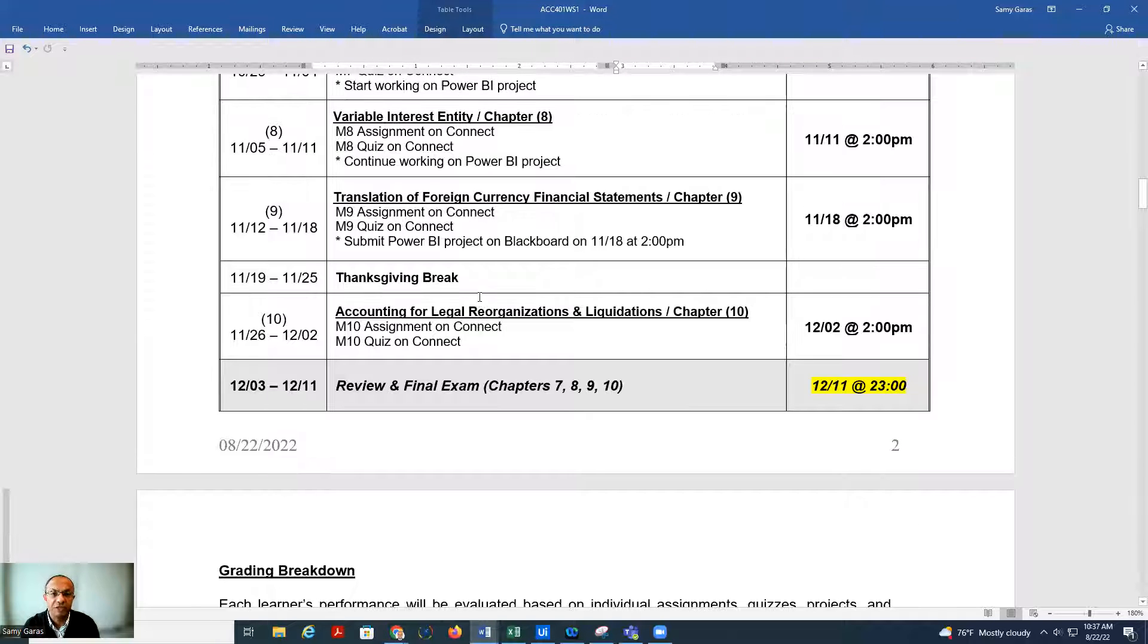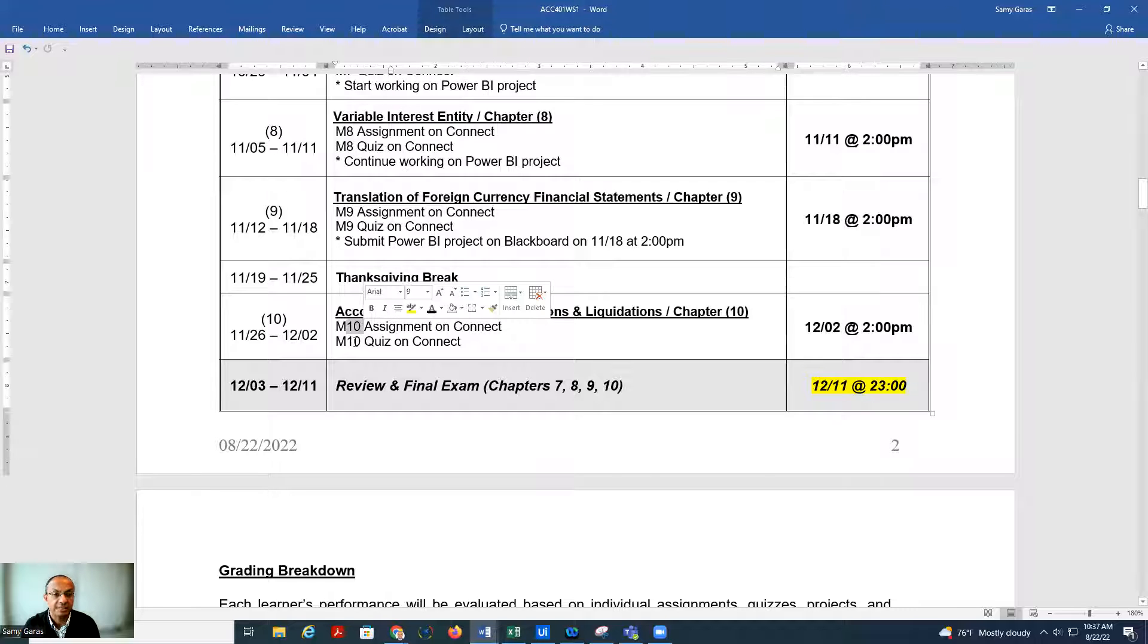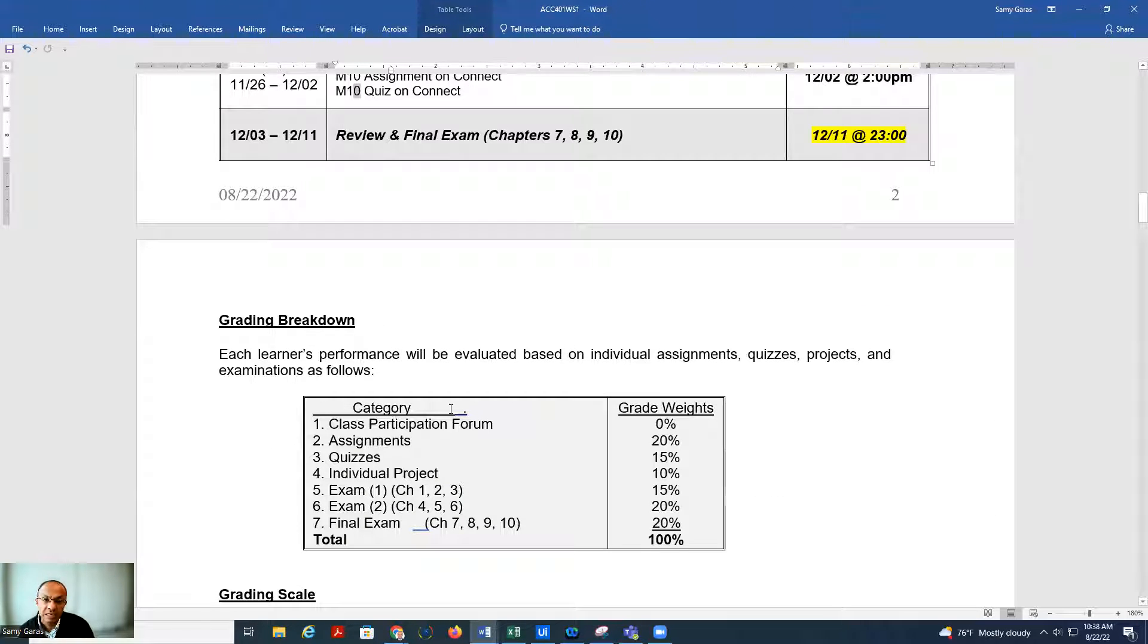Usually I drop off the lowest two assignments and the lowest two quizzes. So here you have 10 assignments and 10 quizzes. I drop off the lowest two. Why I do that? Because I know sometimes you might not meet the deadline. Sometimes you get low score in one of them or two of them, so I drop it off.